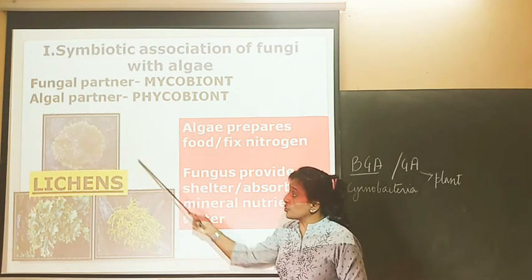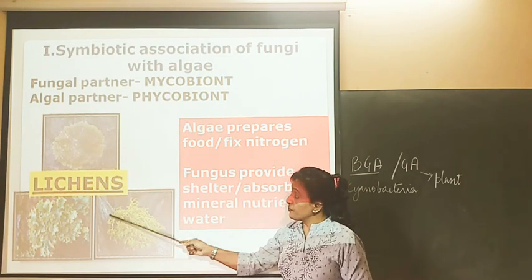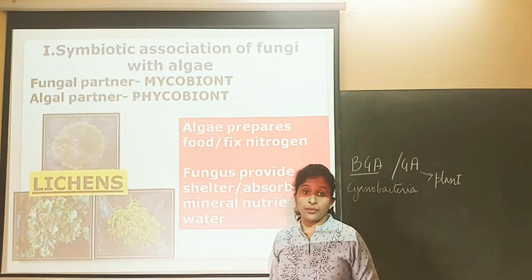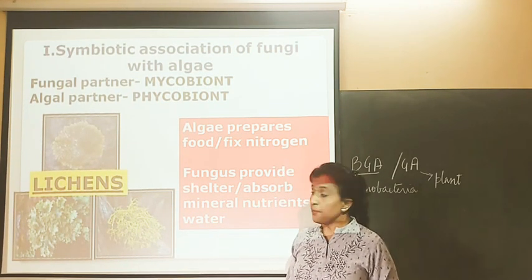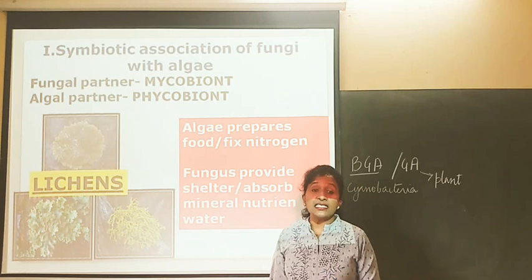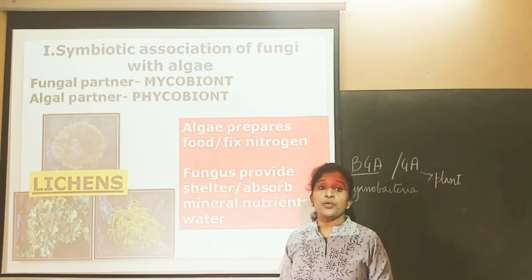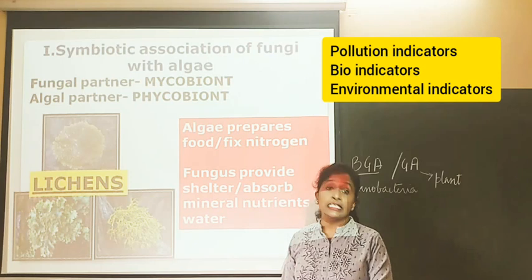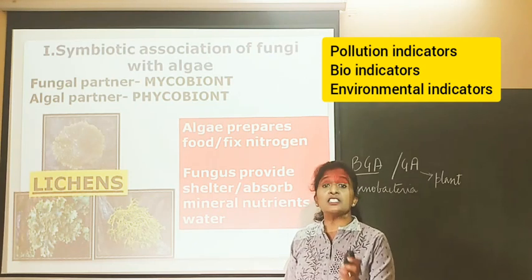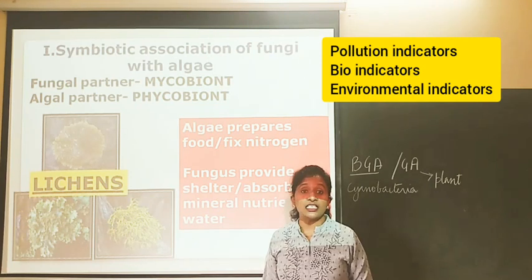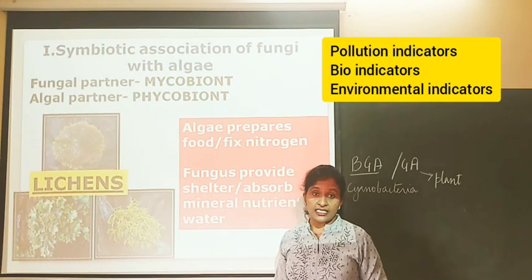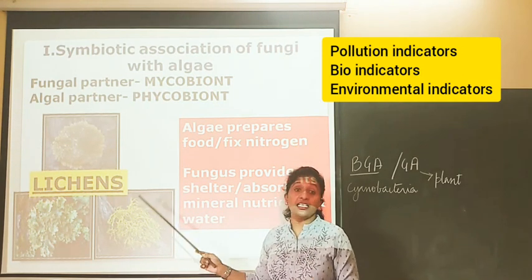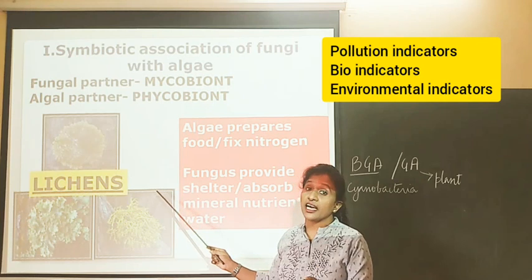According to their growth form, lichens can be crustose, foliose, or fruticose. Lichens are said to be very good pollution indicators or environmental indicators. Wherever there is pollution, we won't see these lichens, especially in areas badly polluted with sulfur dioxide.